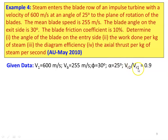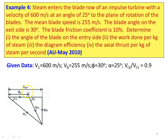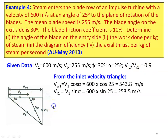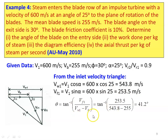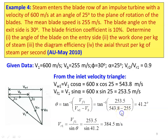Given data: V1 equals 600 m/s, blade speed VB equals 255 m/s, exit blade angle phi equals 30 degrees, alpha equals 25 degrees, friction coefficient 10 percent so VR2/VR1 equals 0.9. From the inlet velocity triangle: VW1 equals V1 cos alpha equals 600 cos 25 equals 543.8 m/s, VF1 equals V1 sin alpha equals 600 sin 25 equals 253.5 m/s. Theta equals tan inverse of 253.5 divided by (543.8 minus 255) equals 41.2 degrees. VR1 equals VF1 divided by sin theta equals 253.5 divided by sin 41.2 equals 384.5 m/s.